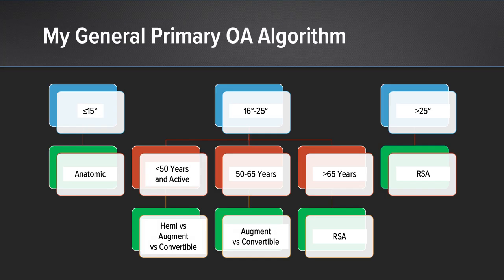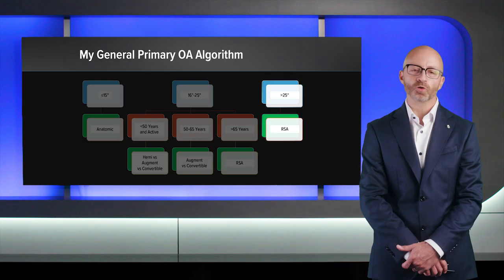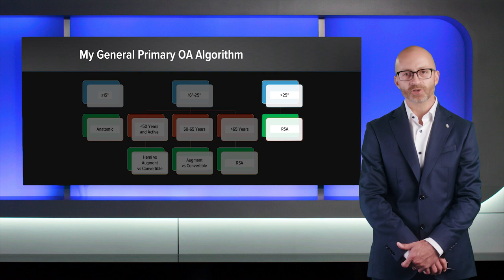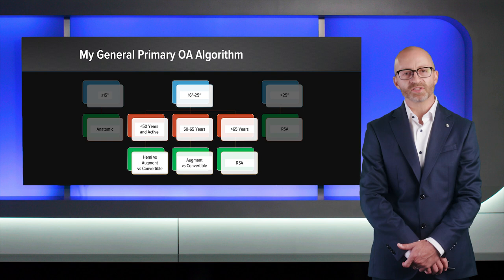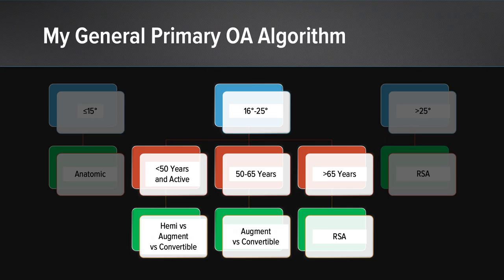This is what my general primary osteoarthritis algorithm looks like. In a patient with 15 degrees of retroversion or less, we proceed with minimal-to-anatomic glenoid replacement with correction of version, based on subchondral bone violation being minimal and correction being less than 15 degrees. In a patient with greater than 25 degrees of retroversion, we go to reverse shoulder arthroplasty almost regardless of age, because the risk of long-term failure with an anatomic implant is so high. Then we have the in-between range of 16 to 25 degrees, where we can choose between augment, convertible, and RSA based on age and activity level — that middle zone is where augmented implants perform well.